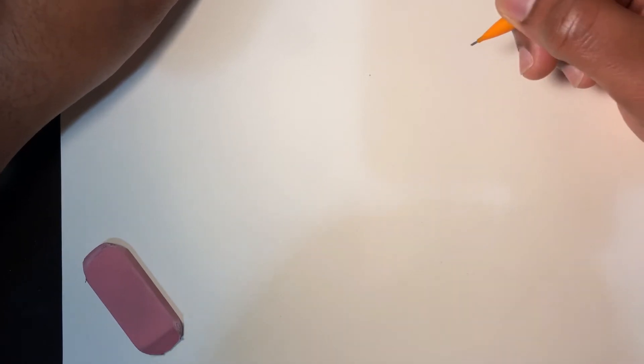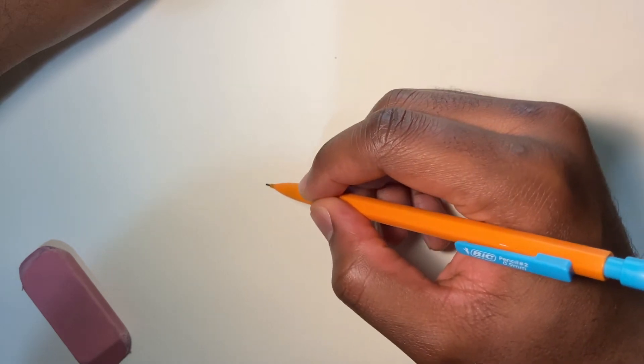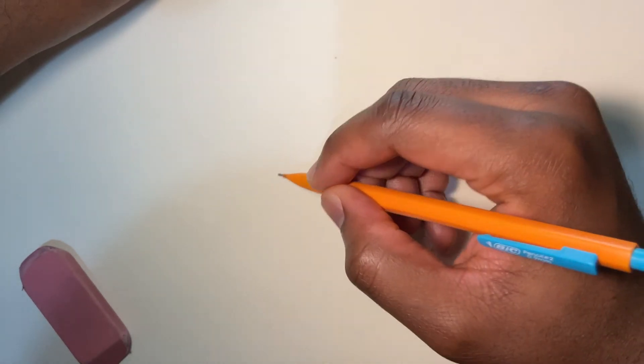Sometimes you'll see that when people want to start drawing objects, they start off with an outline, like an overall outline.